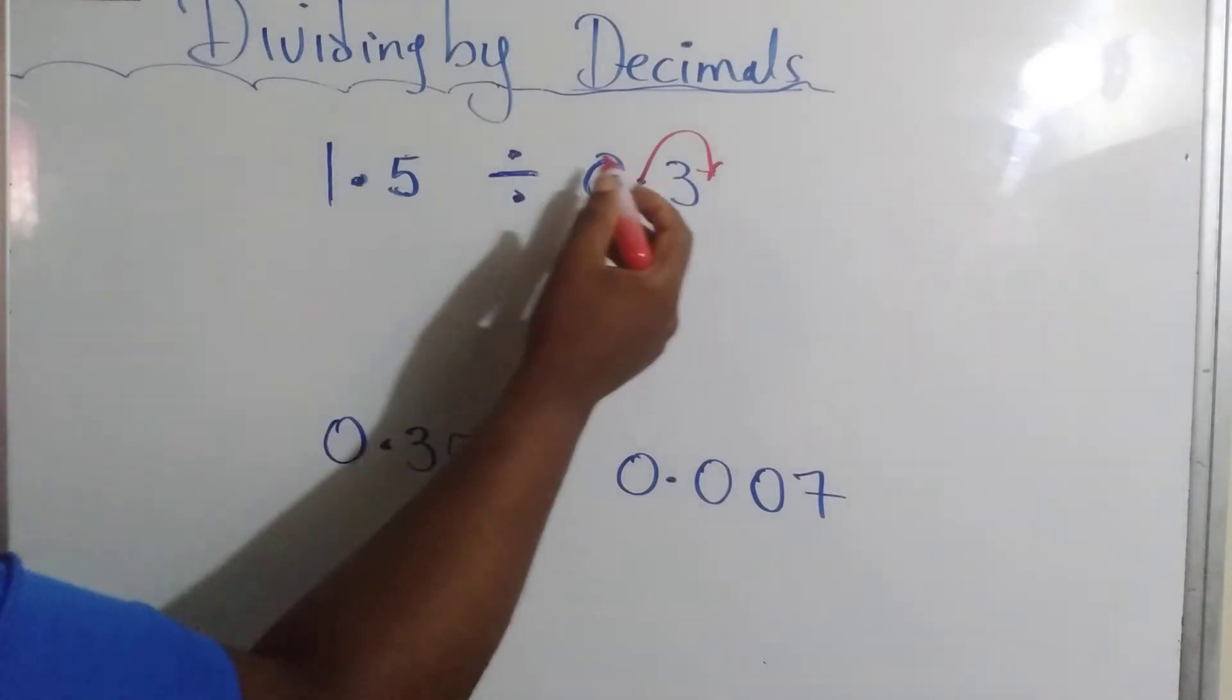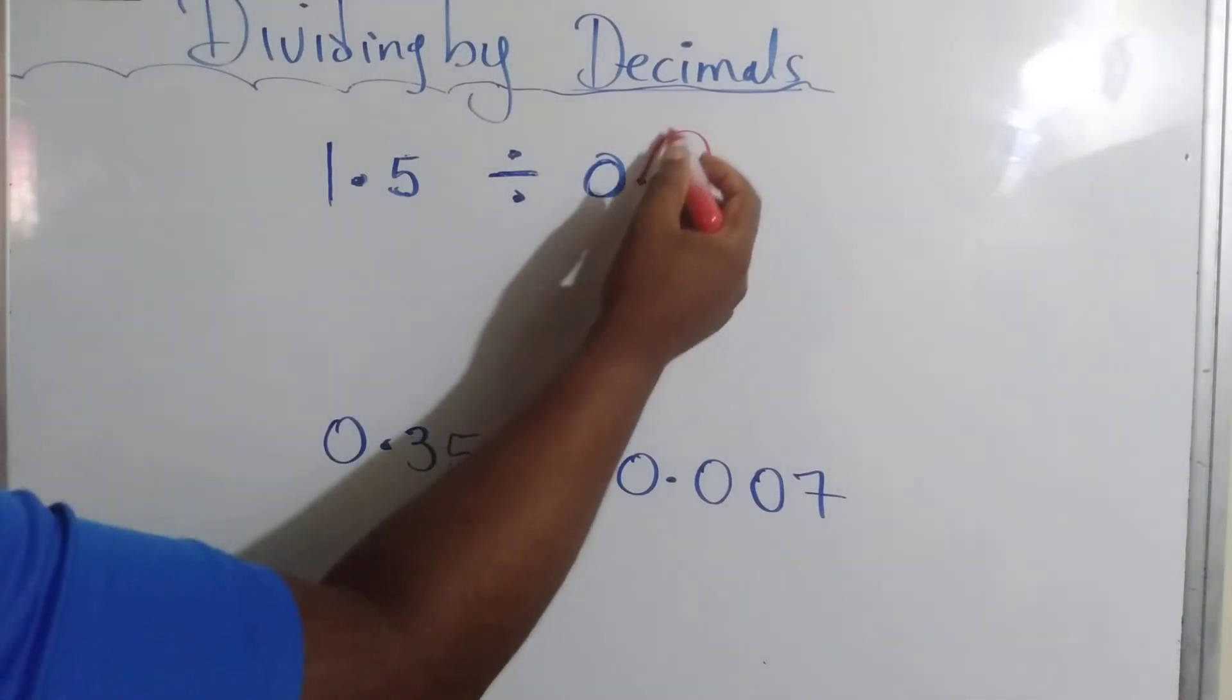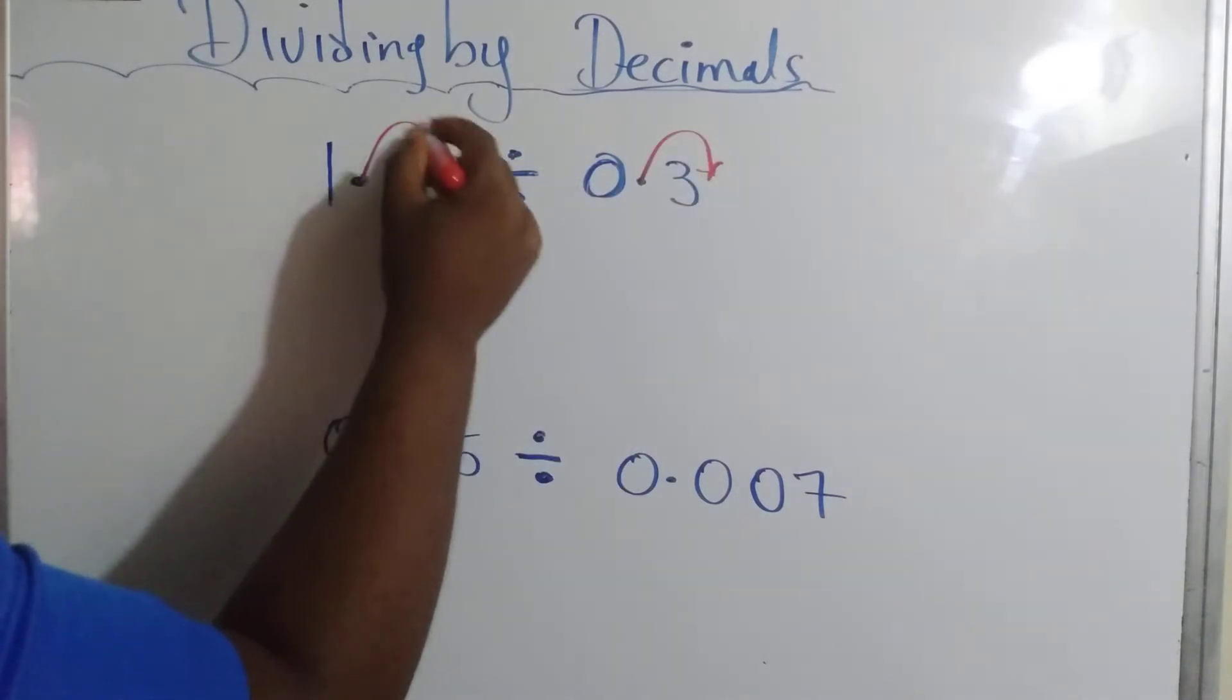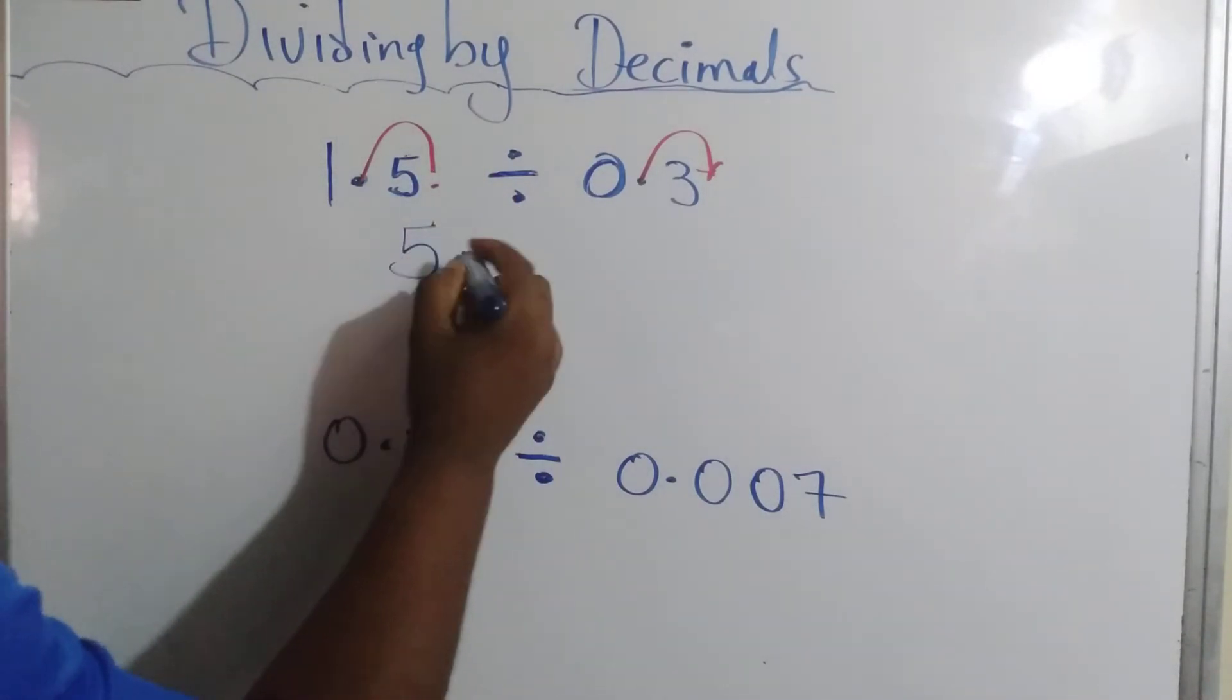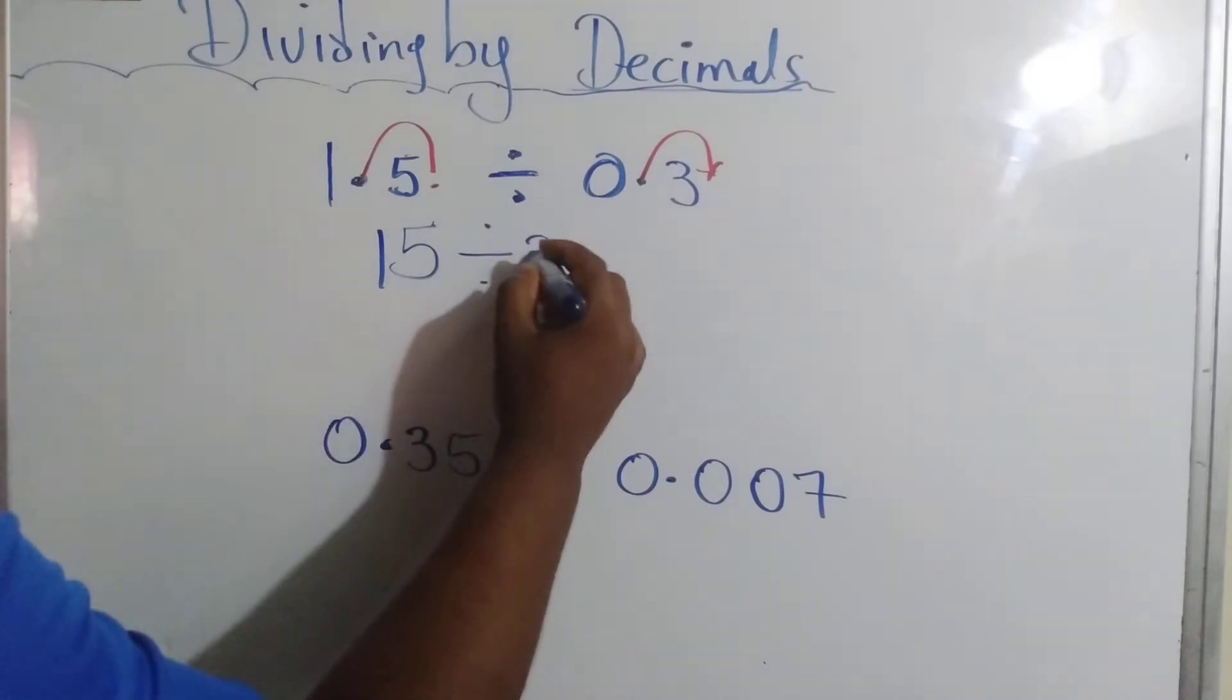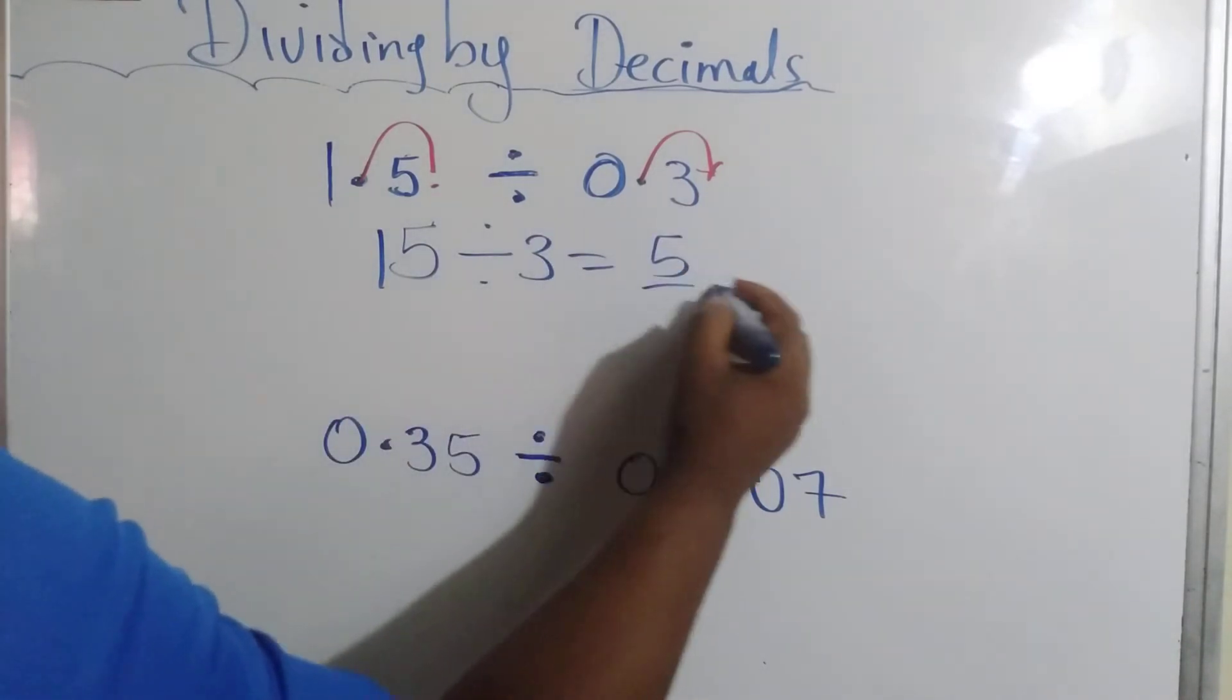So this becomes three. However, the same number of decimal places you move here, you have to move it there. So this becomes 15 divided by 3. And the answer is 5. It's that easy.